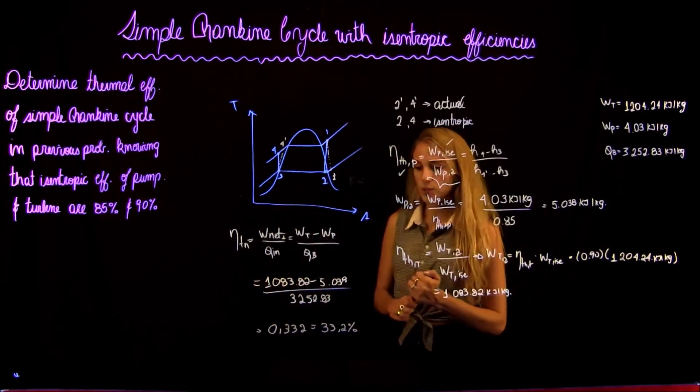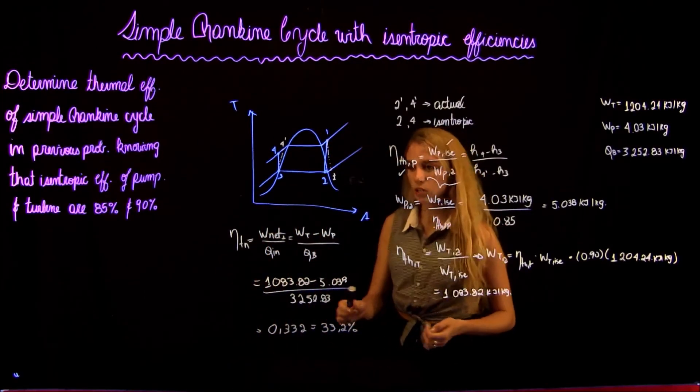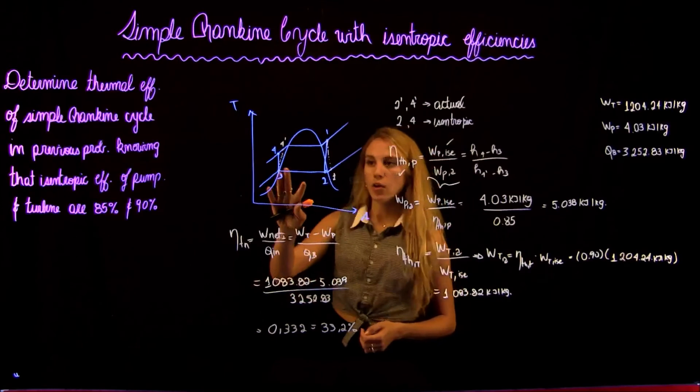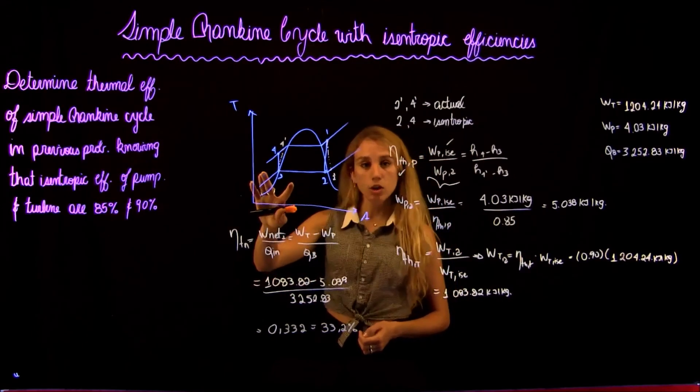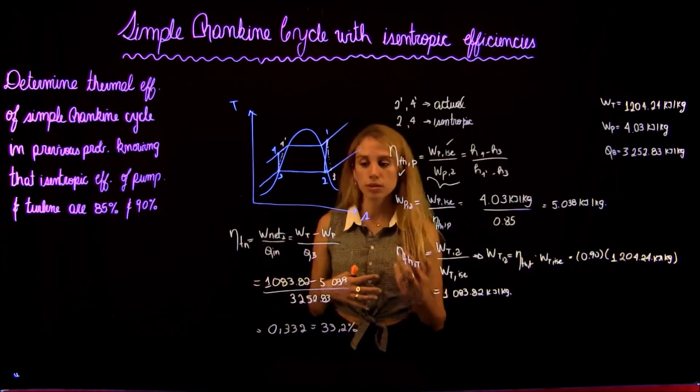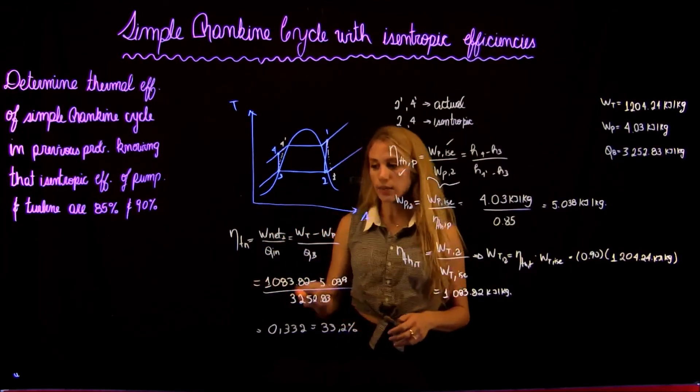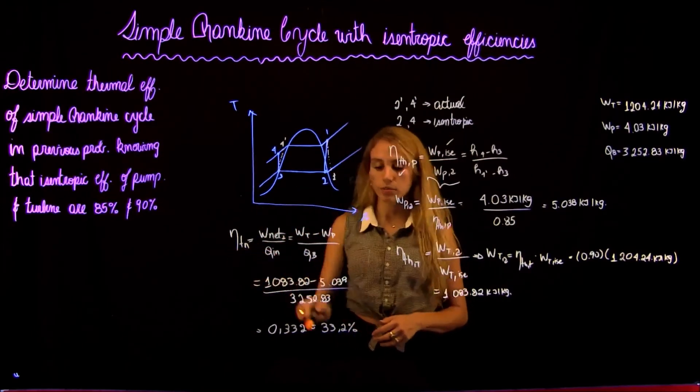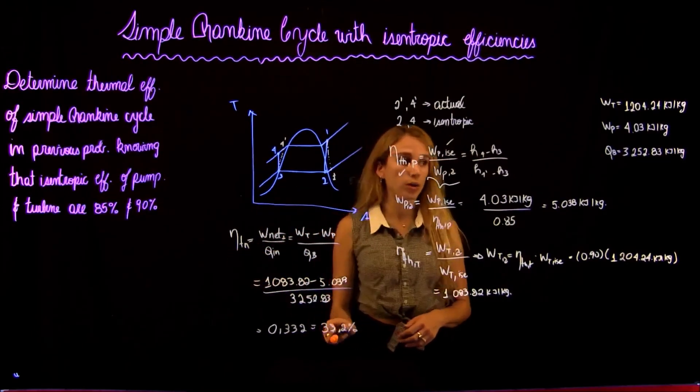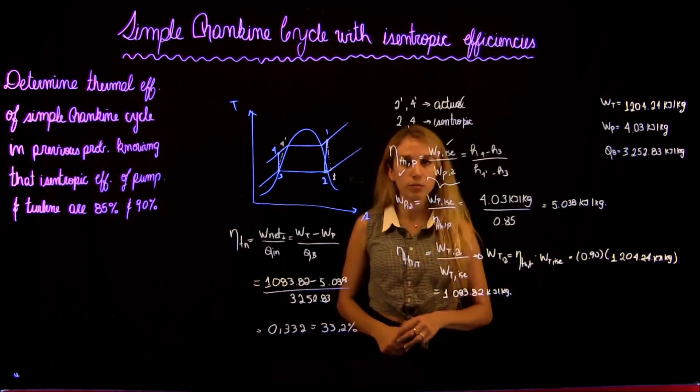So as we said before, in an actual case there are losses due to different factors, and that is why the thermal efficiency is lower than what we found in the isentropic case.